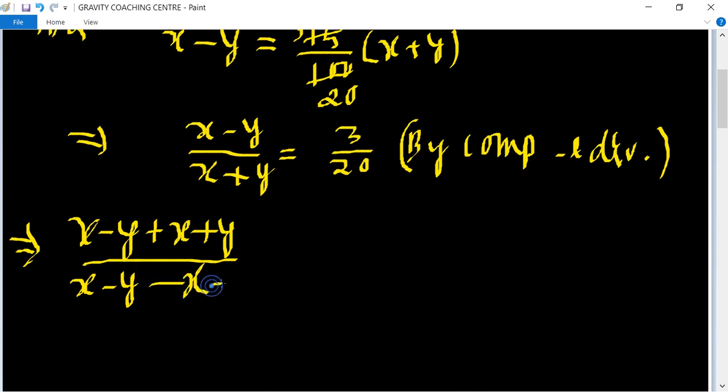This implies 2x upon negative 2y equals 23 upon negative 17.